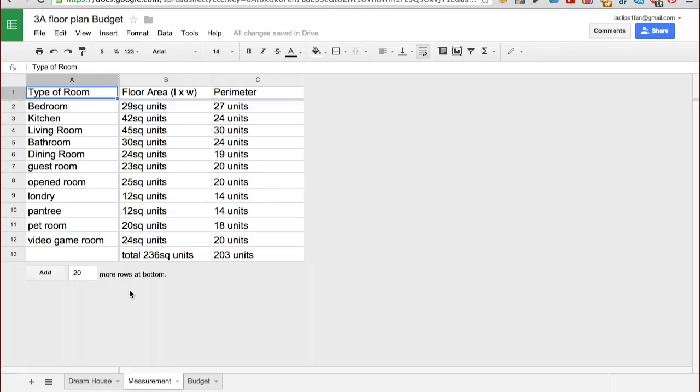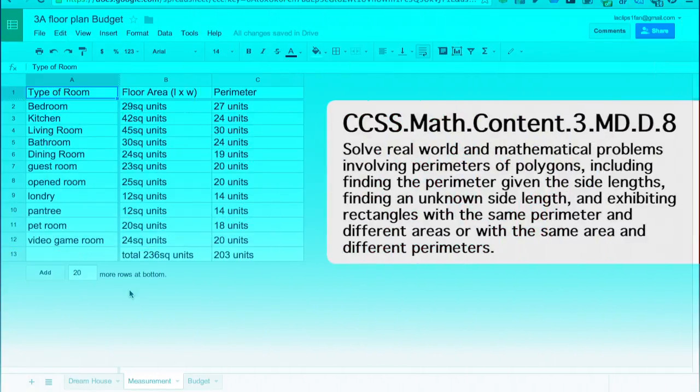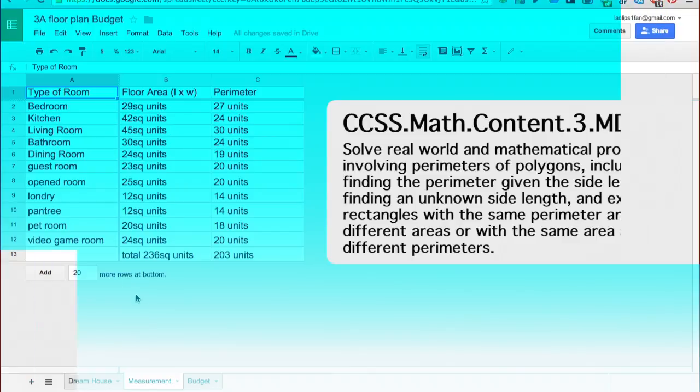This portion of the project incorporated the measurement and data Common Core standards, which state that students will be able to multiply side lengths to find areas of rectangles with whole number side lengths, and solve real world and mathematical problems involving perimeters of polygons.